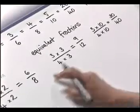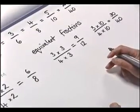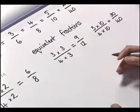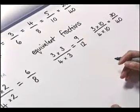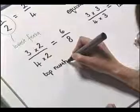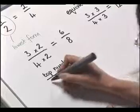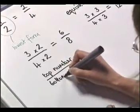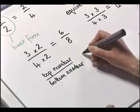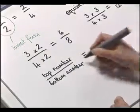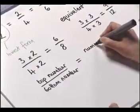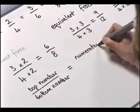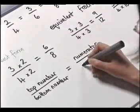So it's very easy to find equivalent fractions, as long as you multiply the top number and the bottom number by the same number. Now we have some mathematical language here: instead of using the words 'top number' and 'bottom number', the top number is called the numerator and the bottom number the denominator.